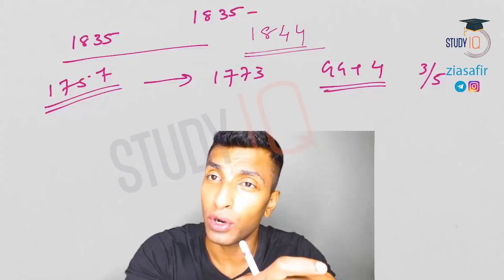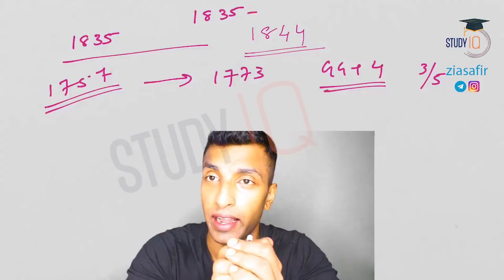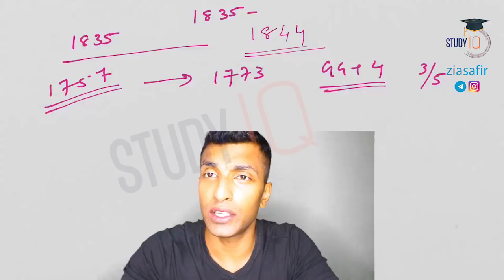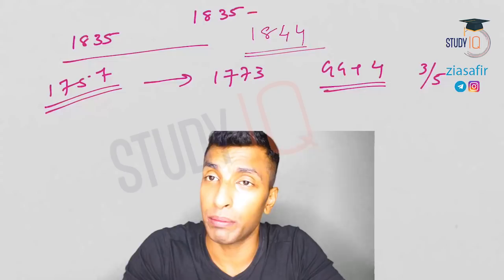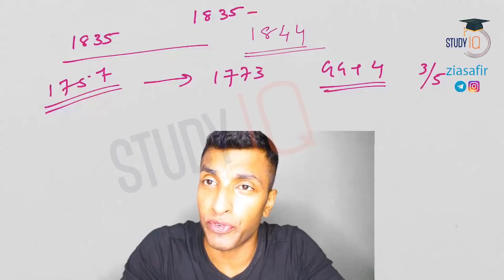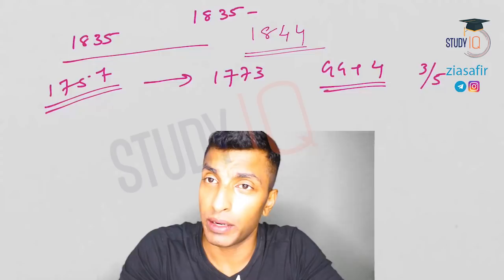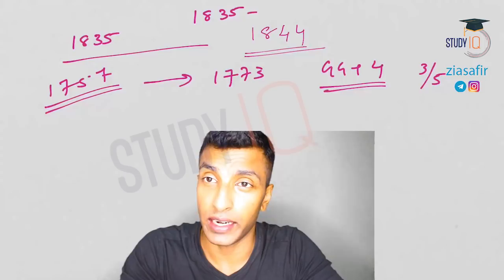That problem would be overcome later in the 1784 Pitt's India Act. You need to know that the first Governor General was Lord Warren Hastings. The first four council members — Richard Barwell, Philip Francis, George Monson, and John Clavering — were appointed by Parliament to regulate the company. The second provision of the Regulating Act was the establishment of a Supreme Court, which was set up in Calcutta in 1774. The Act was in 1773; the Court was established in 1774.